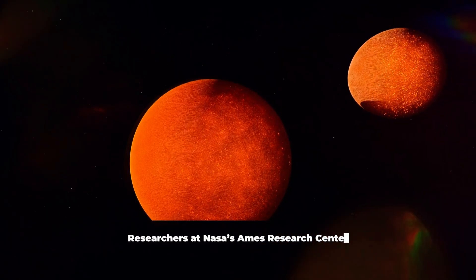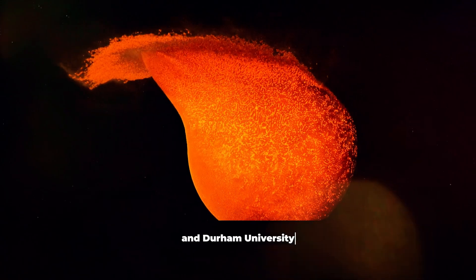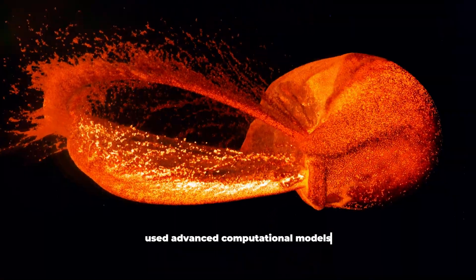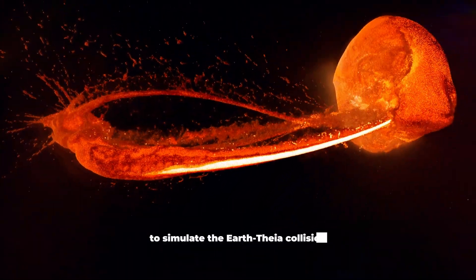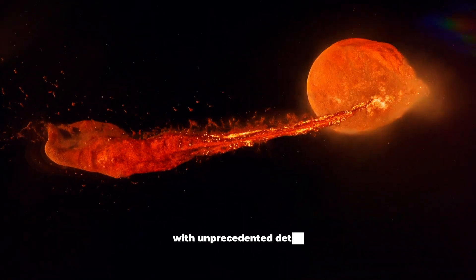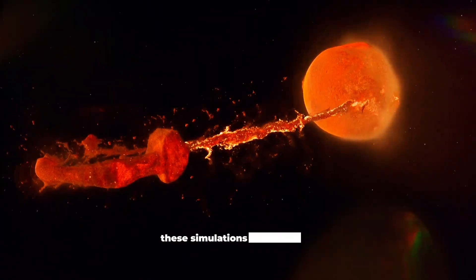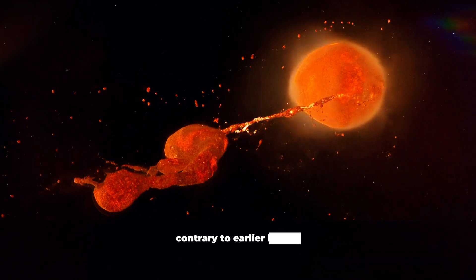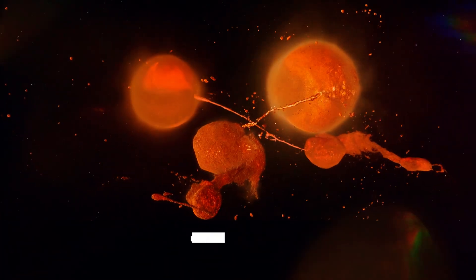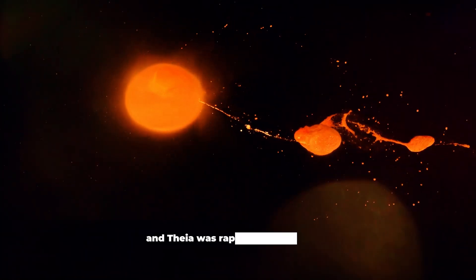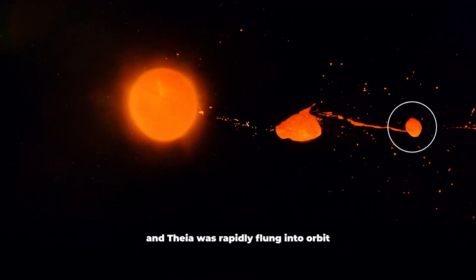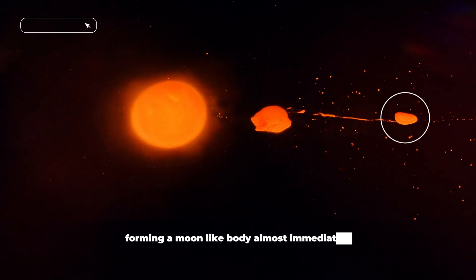Researchers at NASA's Ames Research Center and Durham University used advanced computational models to simulate the Earth-Theia collision with unprecedented detail. These simulations revealed that, contrary to earlier beliefs, material from Earth and Theia was rapidly flung into orbit, forming a Moon-like body almost immediately.